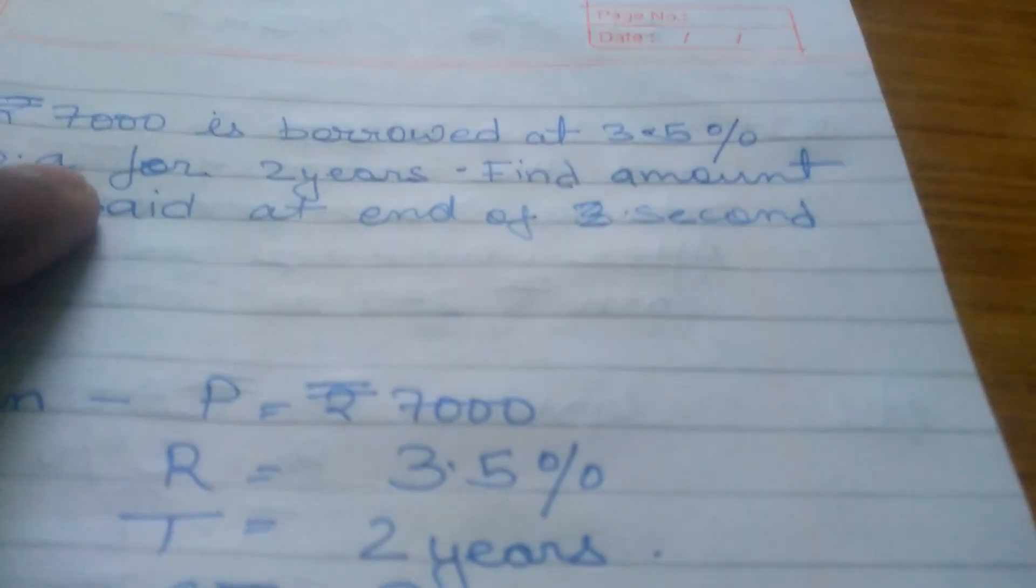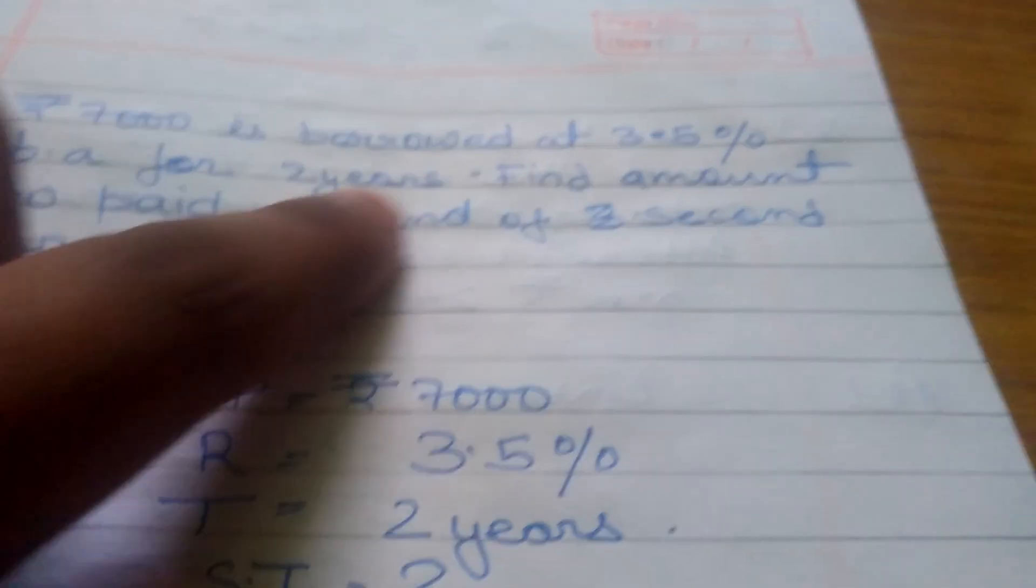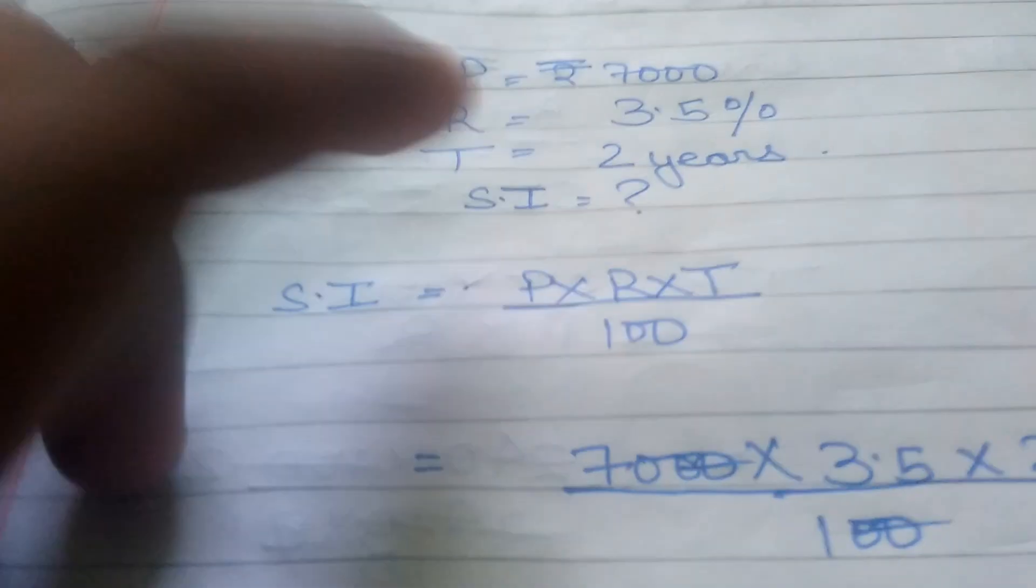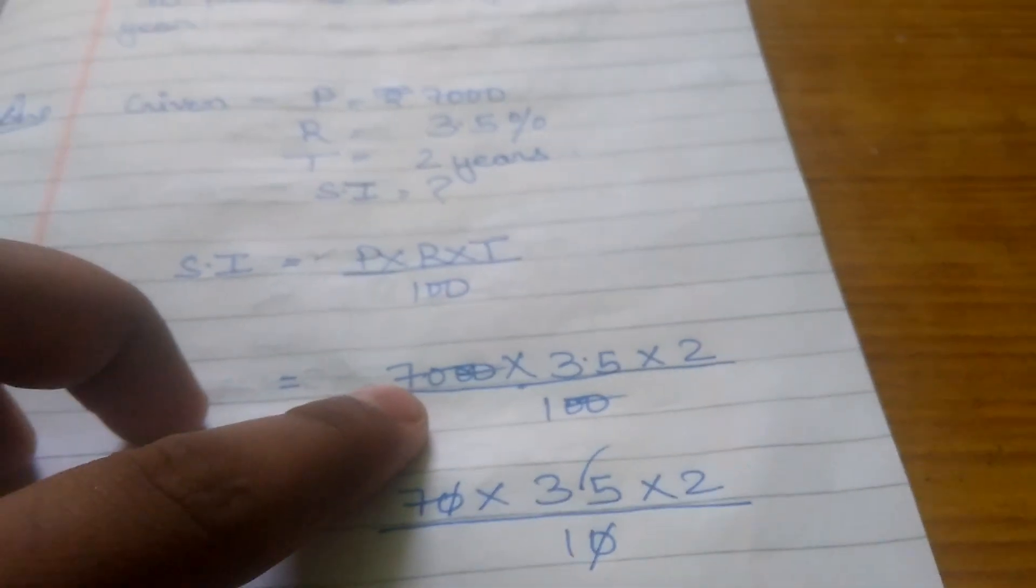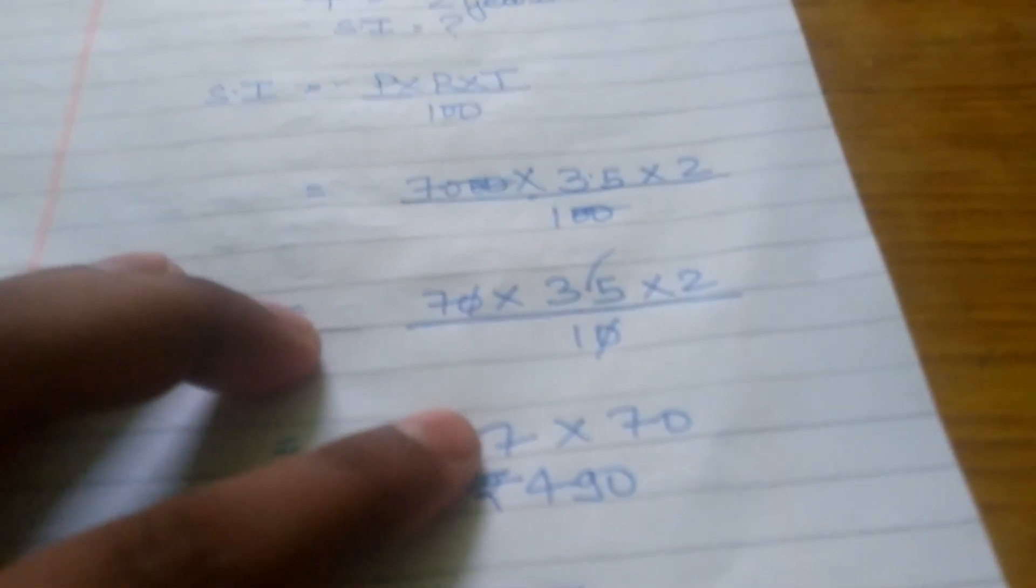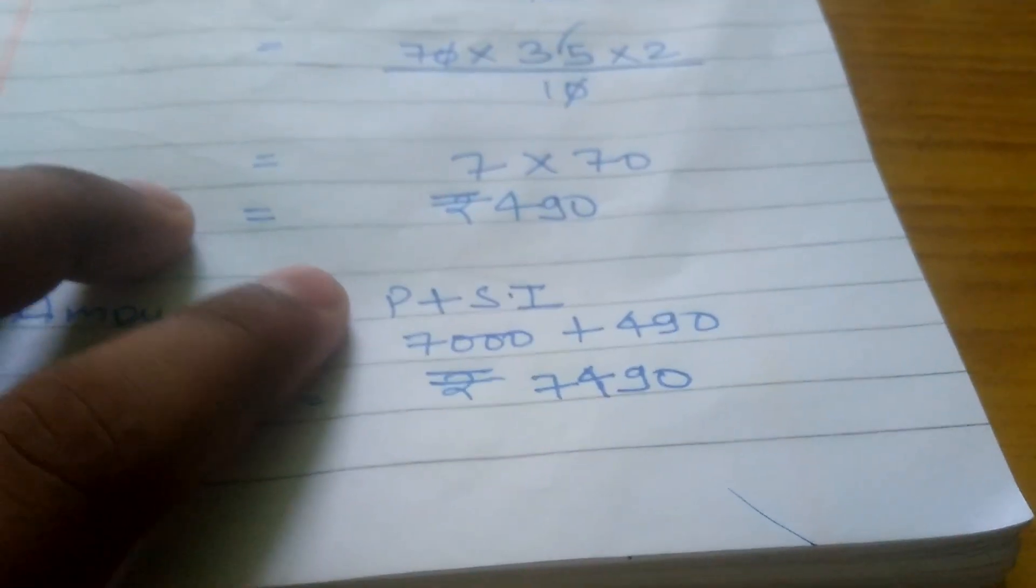Rate is 3.5%, Time is 2 years. We have to find Amount. Given: Principal, Rate, and Time. Using the SI formula: 7,000 × 3.5 × 2 ÷ 100 = ₹490. We have to find Amount here. Amount is Principal + Simple Interest = ₹7,000 + ₹490. Amount is ₹7,490.